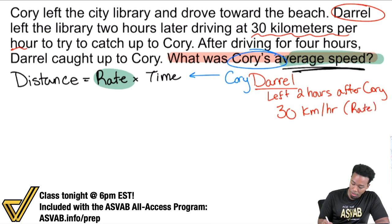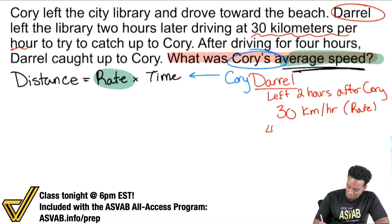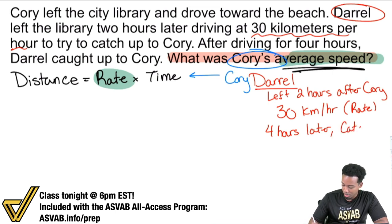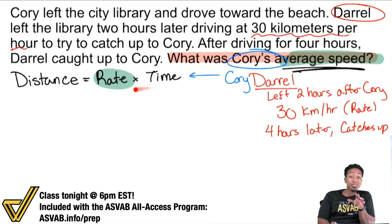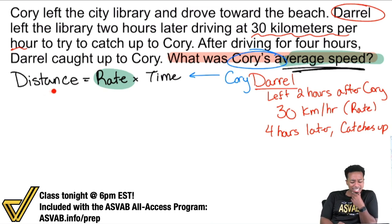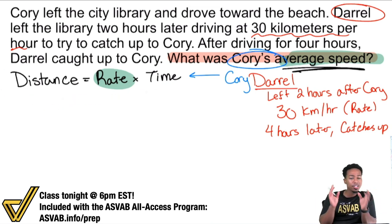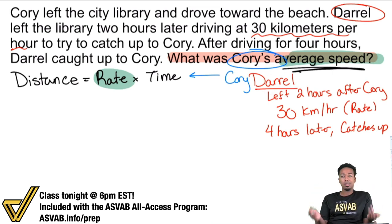Next: to try to catch up to Corey, after driving for four hours, Daryl caught up to Corey. So four hours later, catches up. So there we are — four hours later, catches up. So what does this information all mean? You're looking at this and probably saying: I don't have a distance, I don't have a time for Corey. Because we're focusing specifically on Corey right now — that's the person we're talking about. If I had the distance and I had the time, I could solve this equation for the rate. But what just happened? We read all the information and we're talking about Daryl.